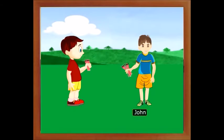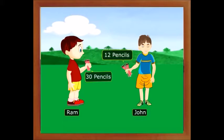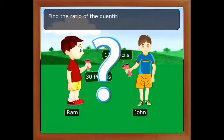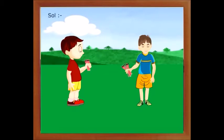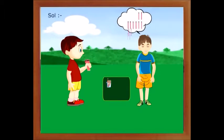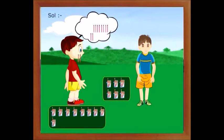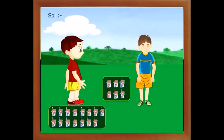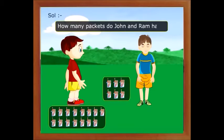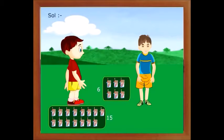This is John and he carries 12 pencils, and this is Ram and he carries 30 pencils. Let us find the ratio of the quantities of pencils that John and Ram carry. If we make packets of two pencils each, John has six packets and Ram has fifteen packets. So the equivalent ratio is 6 is to 15.